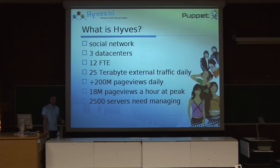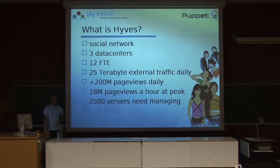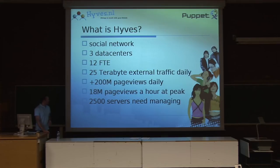Our department consists of 12 full-timers at the moment, just for the system engineers — we have other departments that do the front-end programming. Currently we're doing about 25 terabytes of daily external traffic, and internally we do a lot more. We have about 200 million page views daily, and at peak moments about 80 million page views. To serve that many page views, we have about 2500 servers at the moment, which all need managing — and with 12 people, that is a problem if you don't have something like Puppet installed.